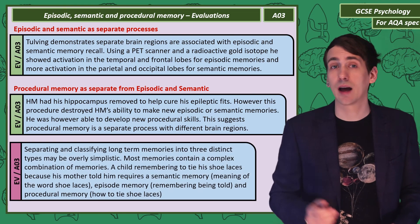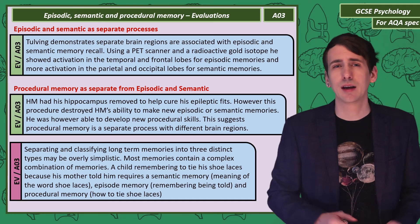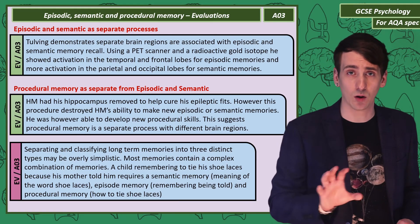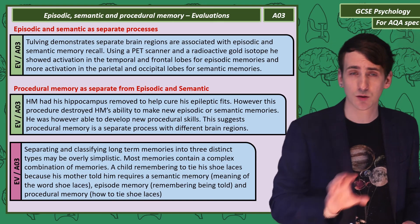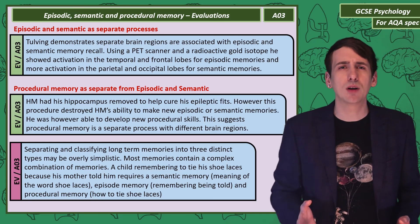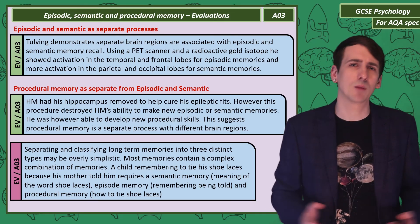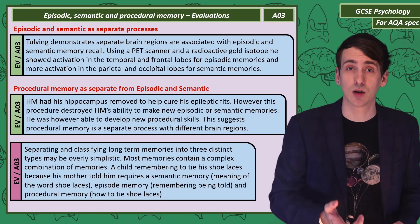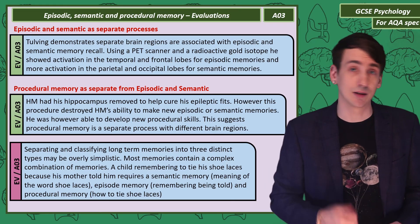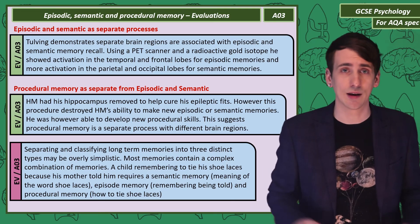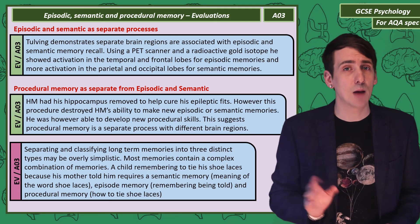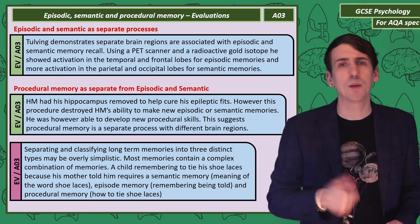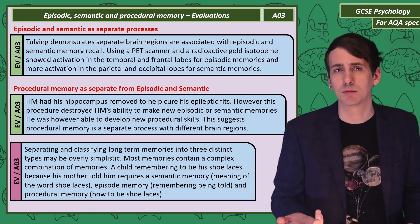A final and critical evaluation is that it might be a little simplistic to classify long-term memories as just one type. Often memories are complex combinations — so a child remembering to tie his shoelaces because his mother told him so needs semantic memory for the word 'shoelaces', episodic memory to remember that he's been told, and procedural memory for how to actually tie them.